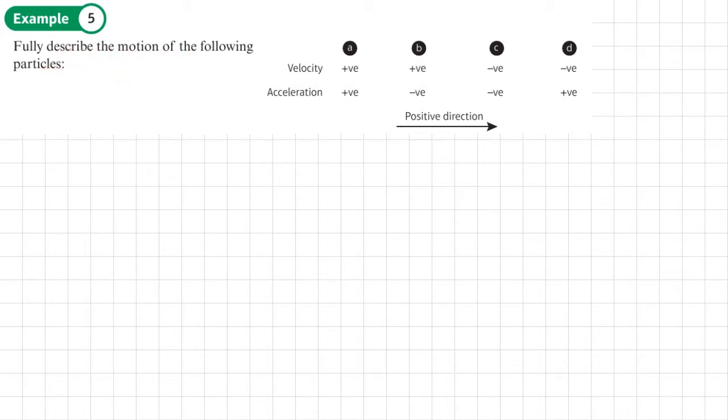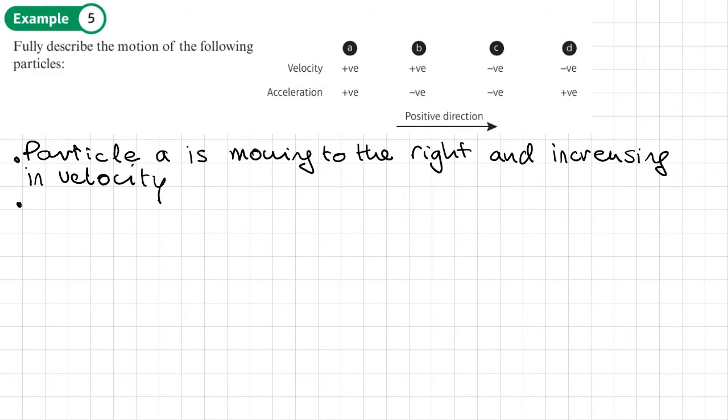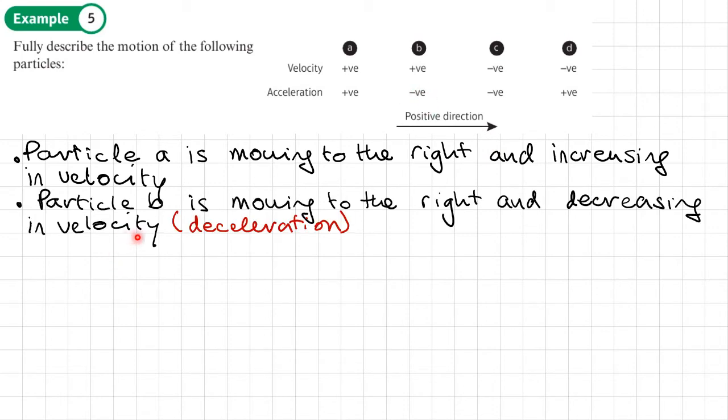Let's start with particle A. Particle A, you can see the velocity is positive, which means it's moving to the right. Its acceleration is positive, so it means it's increasing in that velocity to the right. Particle B is also moving to the right, but it's decreasing in velocity, hence the negative.